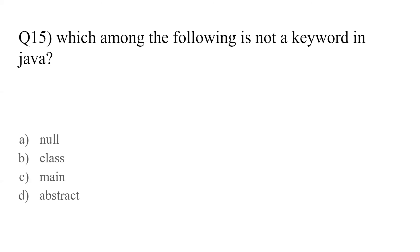Question number fifteen: which among the following is not a keyword in Java? The options are null, class, main, abstract. The answer is C — main. Main is not a keyword in Java. You might think null, but null is a keyword in Java. Main is not a keyword in Java.